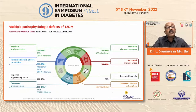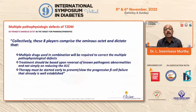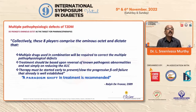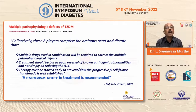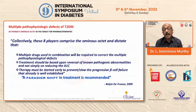This is the statement by Dr. DeFranzo himself way back in 2009: multiple drugs used in combination will be required to correct the multiple pathophysiological defects. Treatment should be based upon reversal of known pathogenic abnormalities and not simply on reducing A1C. Therapy must be started early to prevent or slow the progressive beta-cell failure that is already well established. A paradigm shift in treatment is recommended.